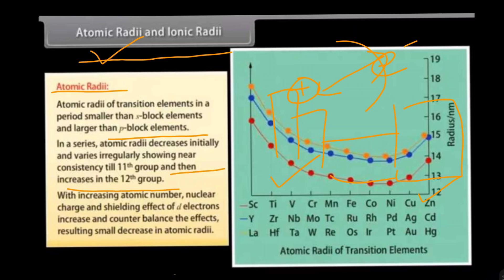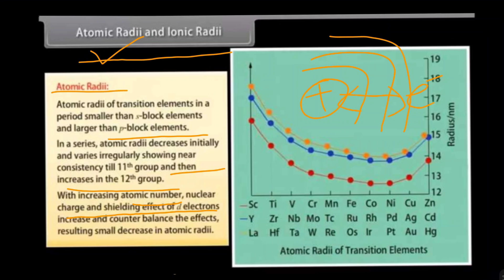With increasing atomic number, nuclear charge and the shielding effect of d electrons both increase and counterbalance the effects, resulting in a small decrease in atomic radii. The shielding effect means the electrons present in inner shells behave as a shield for the outermost electron. That is why atomic radii first decrease, then become roughly constant, and after some elements increase again.